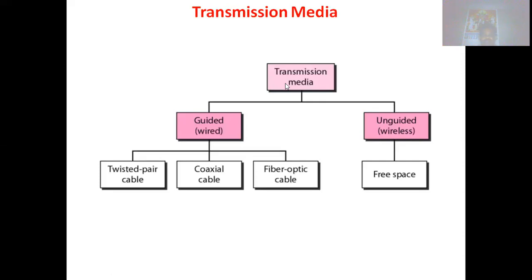There are two types of transmission media: guided transmission media and unguided transmission media. Guided transmission media is wired, and unguided transmission media is wireless. In guided media, we have twisted pair cable, coaxial cable, and fiber optic cable. In unguided or wireless transmission media, we have free space.